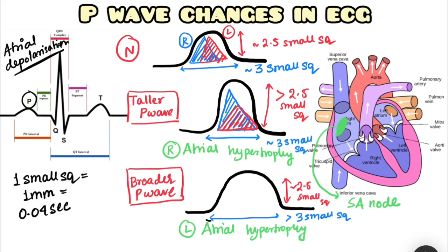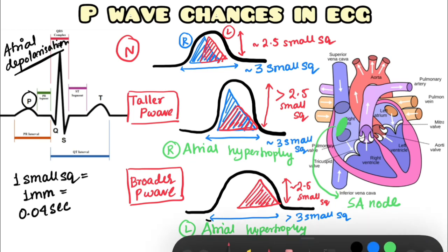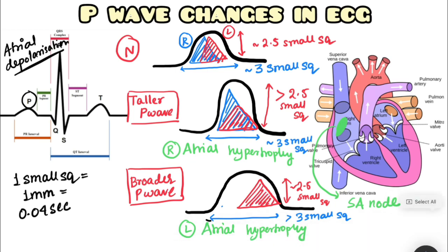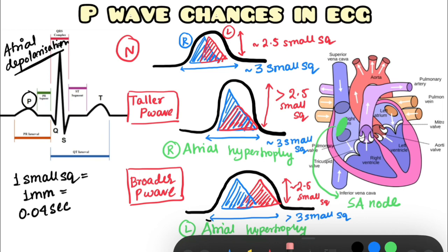As the left atrial mass increases, the left atria gives an independent and tall peak, takes more depolarization time, and gets way more separated than the right atrial depolarization peak. Hence, together they form two temporally separated peaks.